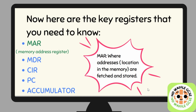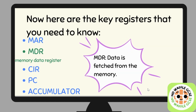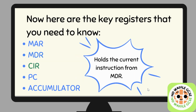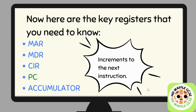If you want to retrieve a piece of data, you need the address of where that data is stored, and the MAR holds this. Then you have the MDR, the Memory Data Register — this is where the data is fetched. So the MAR holds the address, and the MDR holds all of the data held at that memory location. The CIR, standing for Current Instruction Register, holds the current instruction from the MDR and is found in the Control Unit.